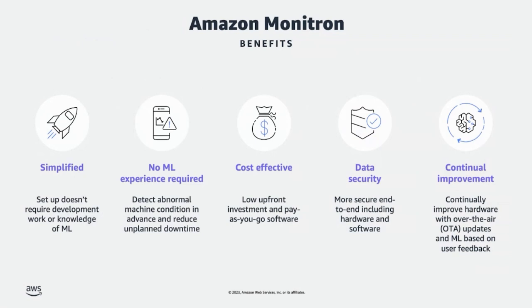Amazon Monitron detects potential failure in equipment, enabling you to take proactive actions and helping you prevent unplanned downtime. It is quick to install — in a matter of a few minutes, the reliability manager can install the sensors and gateways using the Monitron app and start monitoring their devices. Monitron automatically analyzes the data using machine learning models; no prior machine learning knowledge or expertise is required. It is cost-effective with low upfront investment and pay-as-you-go software. It provides continuous improvements to both the hardware and the ML model using over-the-air capability, and the ML models are continuously improved using user feedback provided on the anomalies detected.